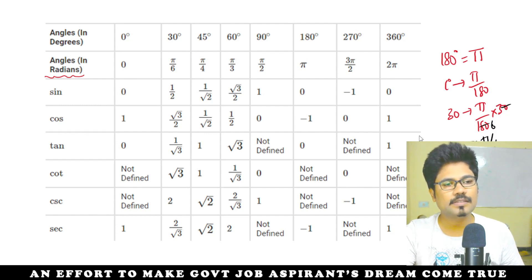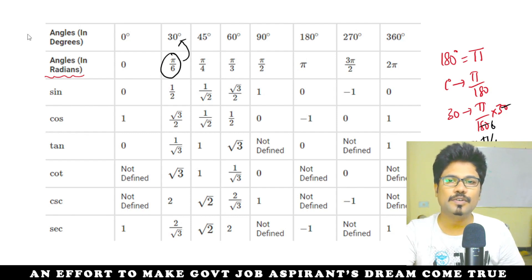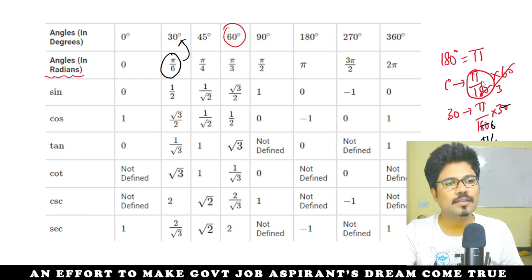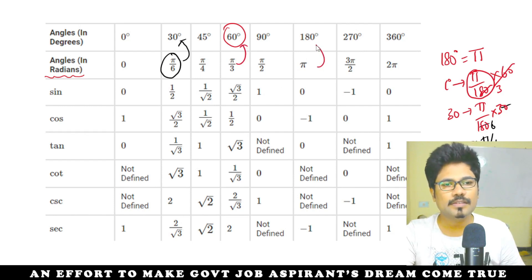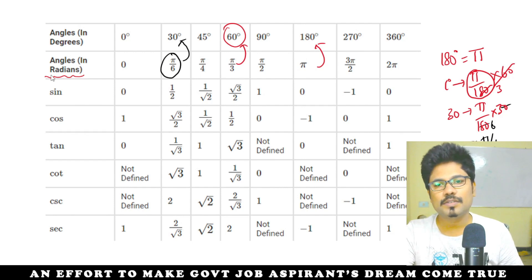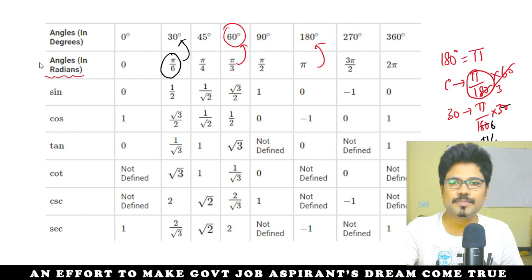So 30 degrees is equal to pi by 6. Similarly, for 60 degrees: pi by 180 into 60 gives pi by 3. So pi by 3 is equal to 60 degrees. And 180 degrees is equal to pi. So that is how we convert angles to radians.